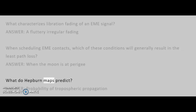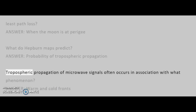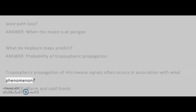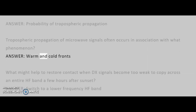What do Hepburn maps predict? Answer: probability of tropospheric propagation. Tropospheric propagation of microwave signals often occurs in association with what phenomenon? Answer: warm and cold fronts.